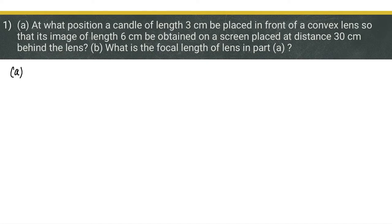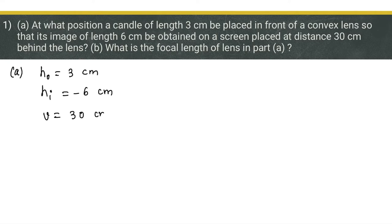In part A, the lens is convex. The height of the object is 3 centimeters. The height of the image is 6 centimeters, but since the image is obtained on a screen, it must be a real image. Real images are always inverted, so as per sign convention, the height of the image is taken as negative. The image is formed at v = +30 centimeters behind the lens.